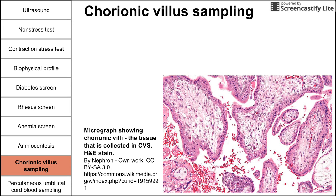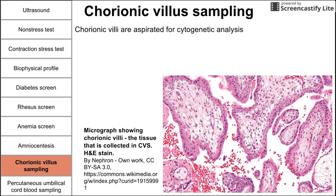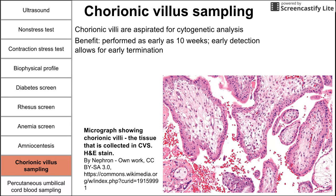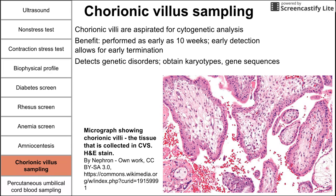Another test is chorionic villus sampling, or CVS. In this test, the chorionic villi are aspirated for cytogenic analysis. The benefit is that it can be performed very early — as early as 10 weeks — allowing for early detection and, if parents choose, early termination. CVS can detect genetic disorders, obtain karyotypes to detect trisomies and other gene disorders, and measure gene sequences. The risk is a 1 in 500 chance of fetal loss.